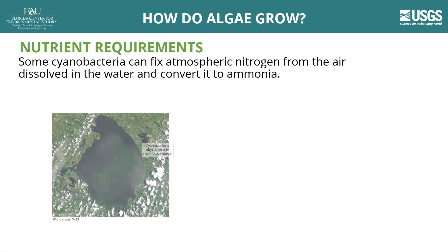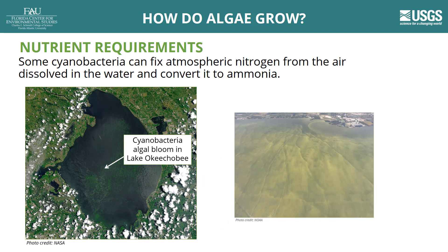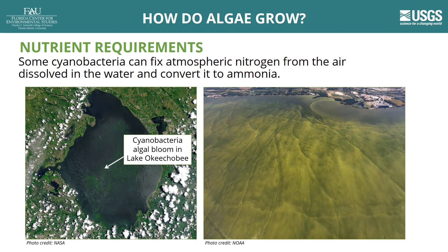Most algae obtain dissolved nutrients from the water, but some cyanobacteria species can fix or convert atmospheric nitrogen into ammonia. This form of nitrogen can then be used by other types of algae. As cyanobacteria die and decay, ammonia is released and can support the growth of other species of algae.